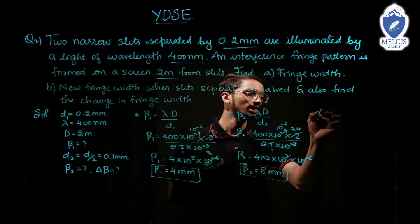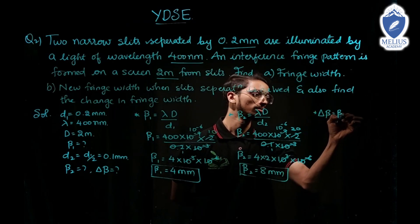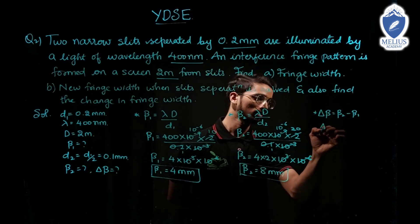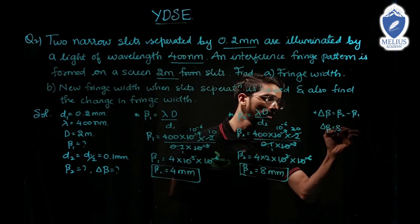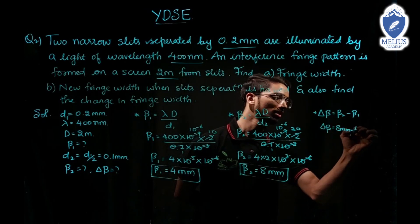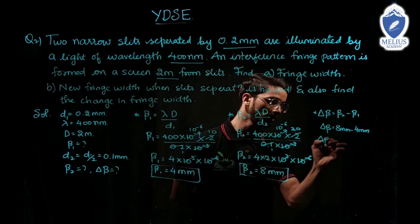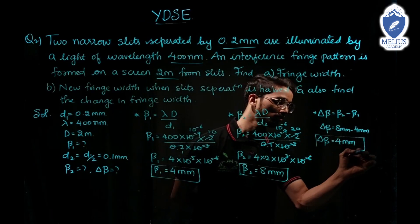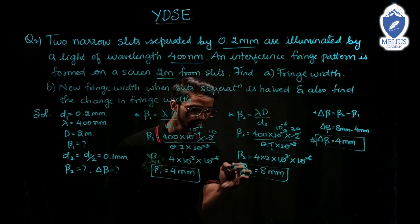Now delta beta equals beta 2 minus beta 1. Delta beta equals 8 millimeter minus 4 millimeter equals 4 millimeter. Delta beta is the change in fringe width.